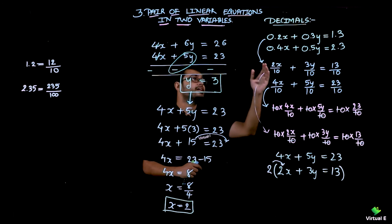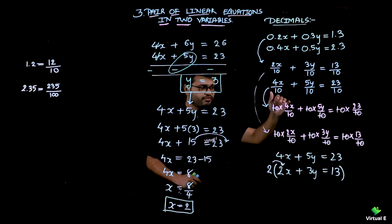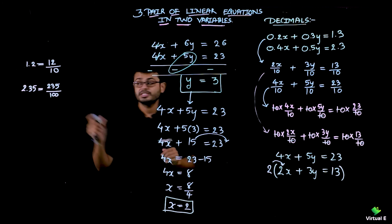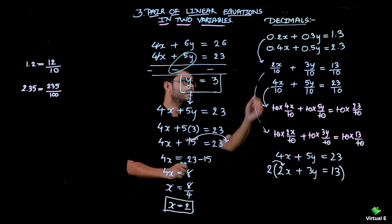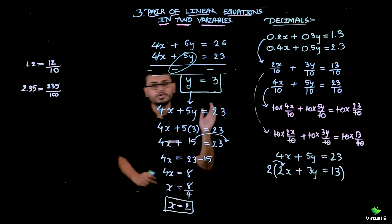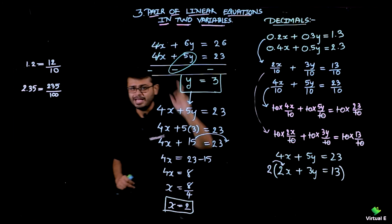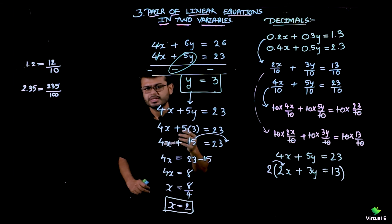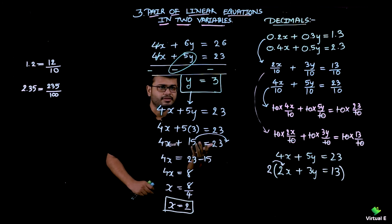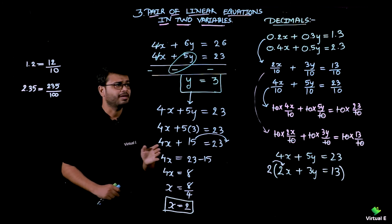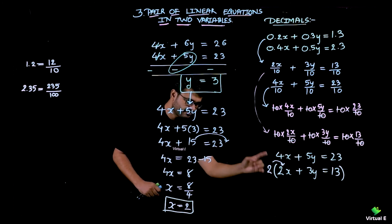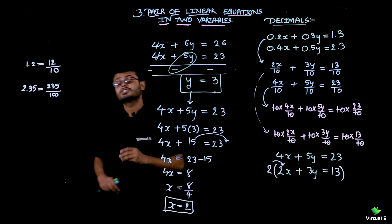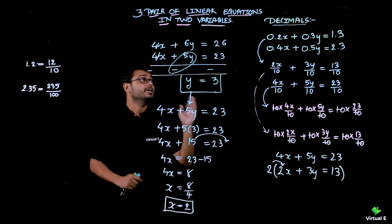Let's recall the steps. First, convert the decimal form into fractions based on the number of decimal places. Then remove the fractions by multiplying each term by the LCM, getting the equations into whole number form. After that, choose any method — elimination, substitution, graphical, or cross multiplication. I solved using elimination: made the x coefficients equal to 4, subtracted to get y, then substituted to get x. This is how you solve equations with decimals.